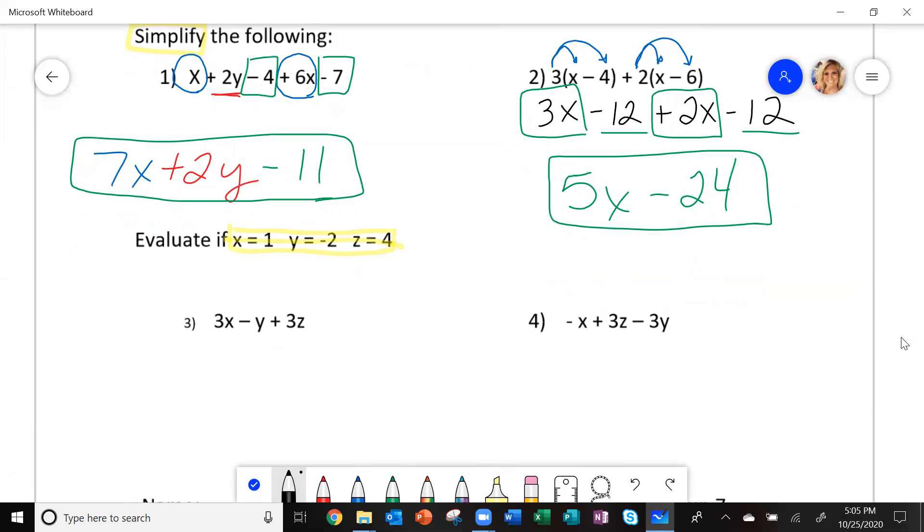So on number 3, I'm going to write this. I'm going to write 3 and instead of x, I'm going to put parentheses minus instead of the y, I'm going to put a parentheses plus 3 and where the z is, put a parentheses. So it says x is 1. So where this x is, I'm going to put a 1. Now y is negative 2. That's going where the y is. So I'm putting in there negative 2 and z is 4. So I'm going to put that in here.